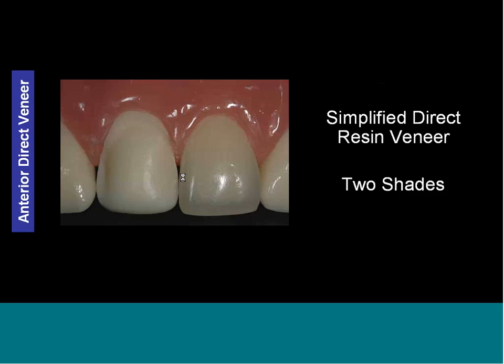Now let's talk about direct veneers. In a class IV we're blocking out more light and have some natural tooth to work with. In a veneer, we're replacing all the facial of the tooth. It's a slightly different protocol but very similar, and again we're going to do this in two shades. Later we'll do it in multiples, but for now, just two.